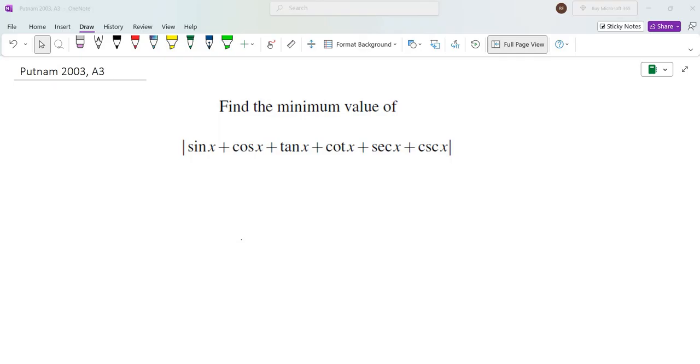So anytime I see tangent, cotangent, secant, and cosecant, it makes sense to write down everything in terms of sine and cosine. Let's do that and see what we get.